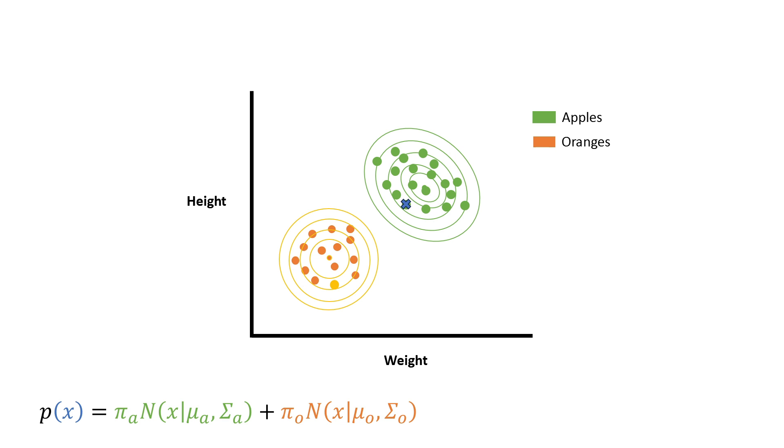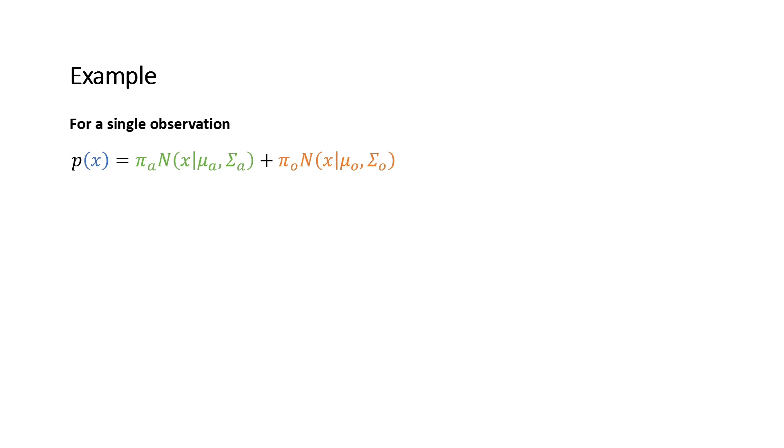Now since we have observed x, we want to maximize this probability. So for a single observation we have the following formula which we explained previously, but we want to maximize the probability of observing all of our observations.